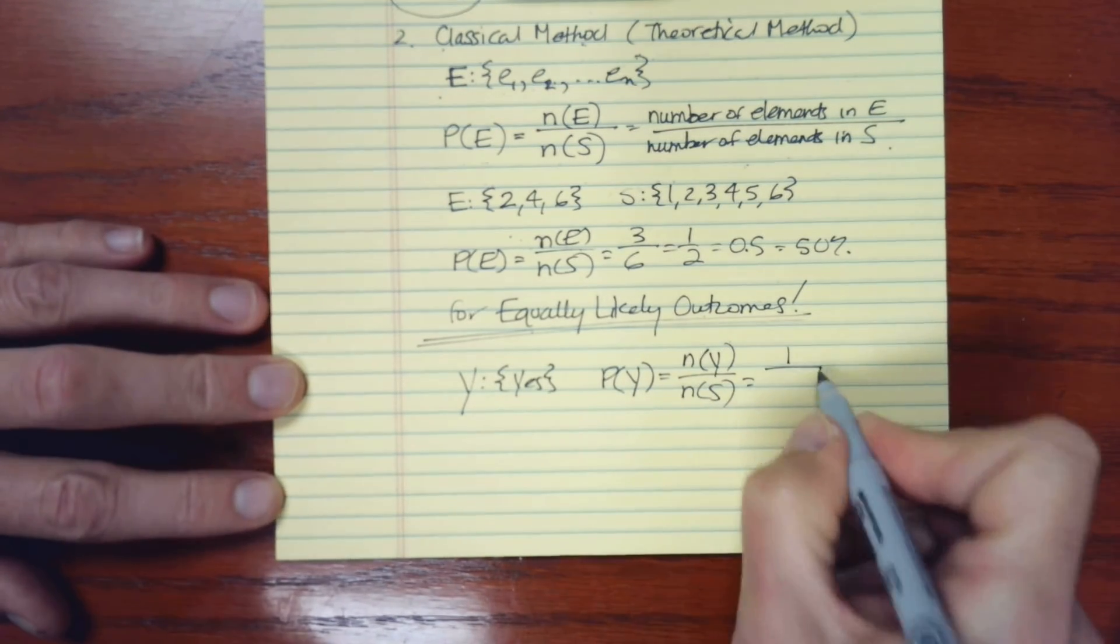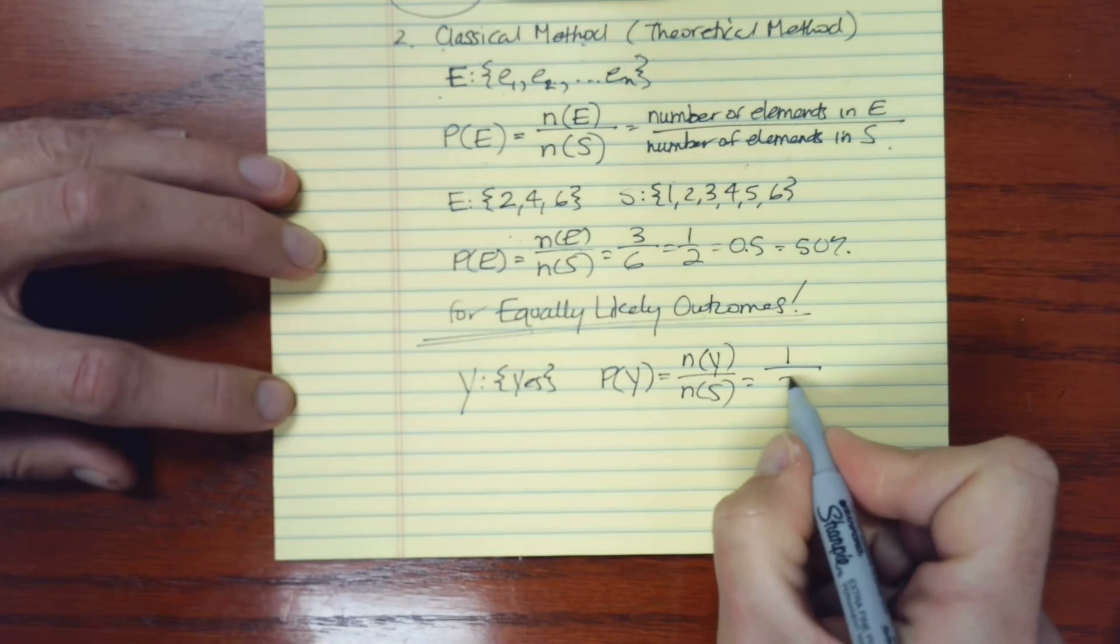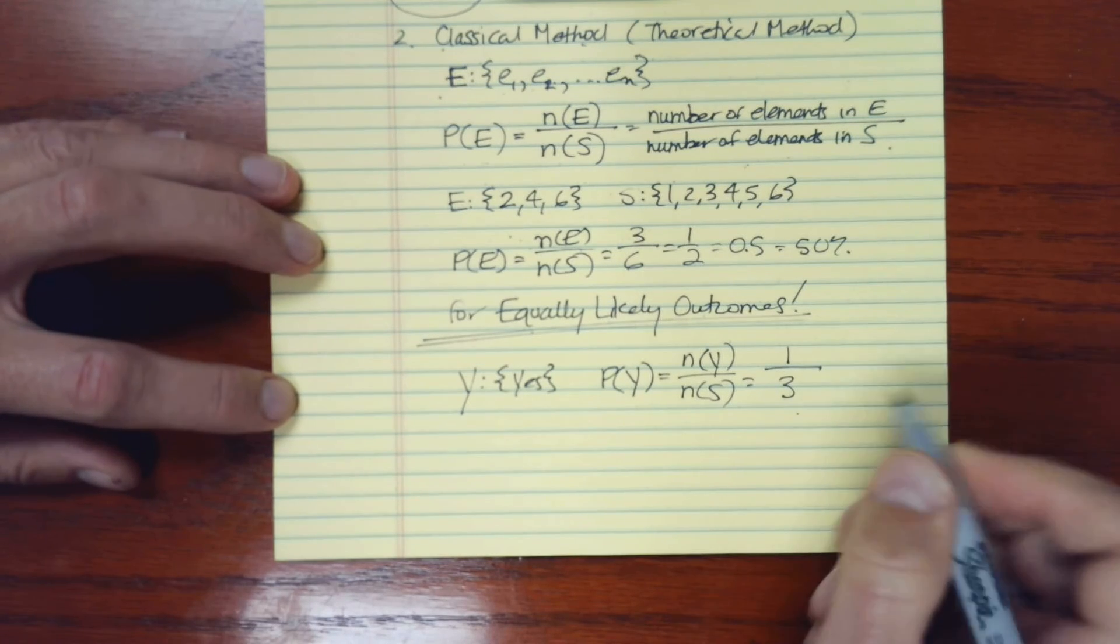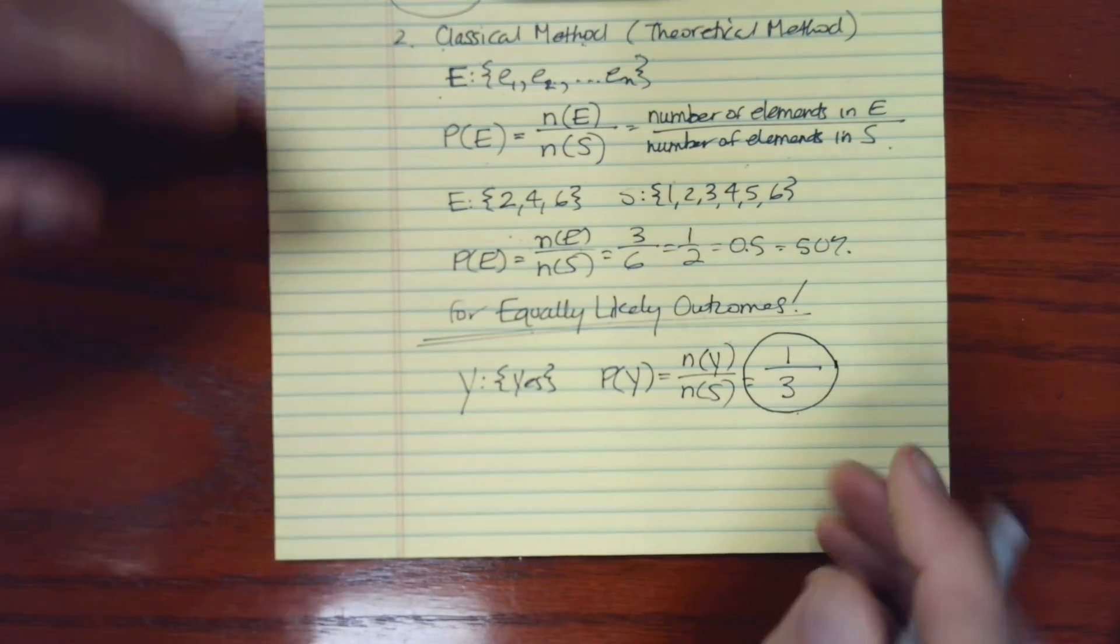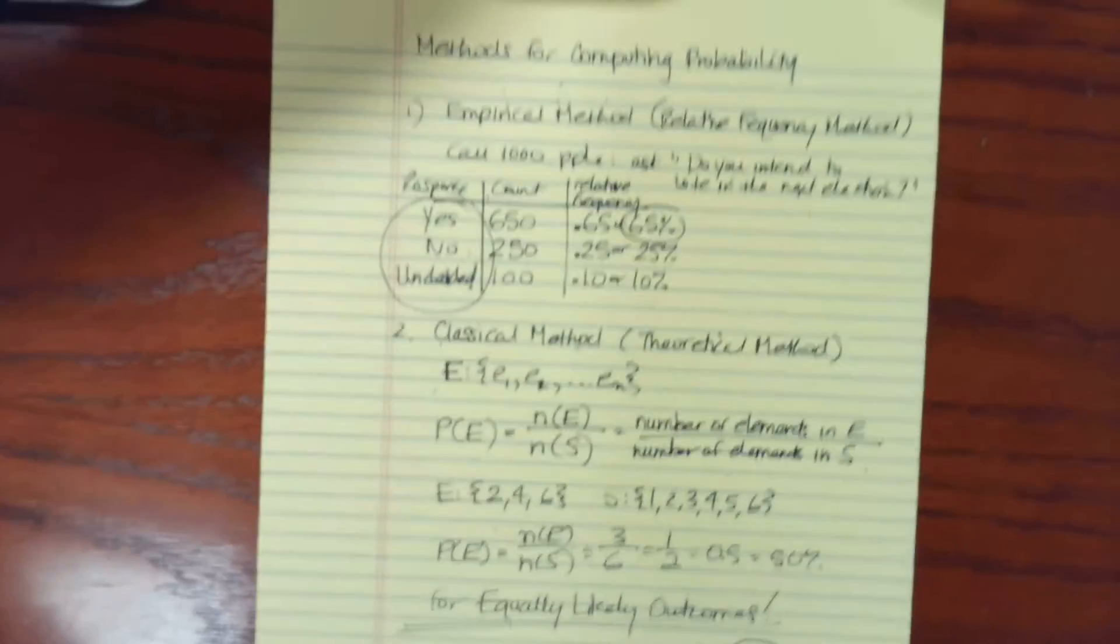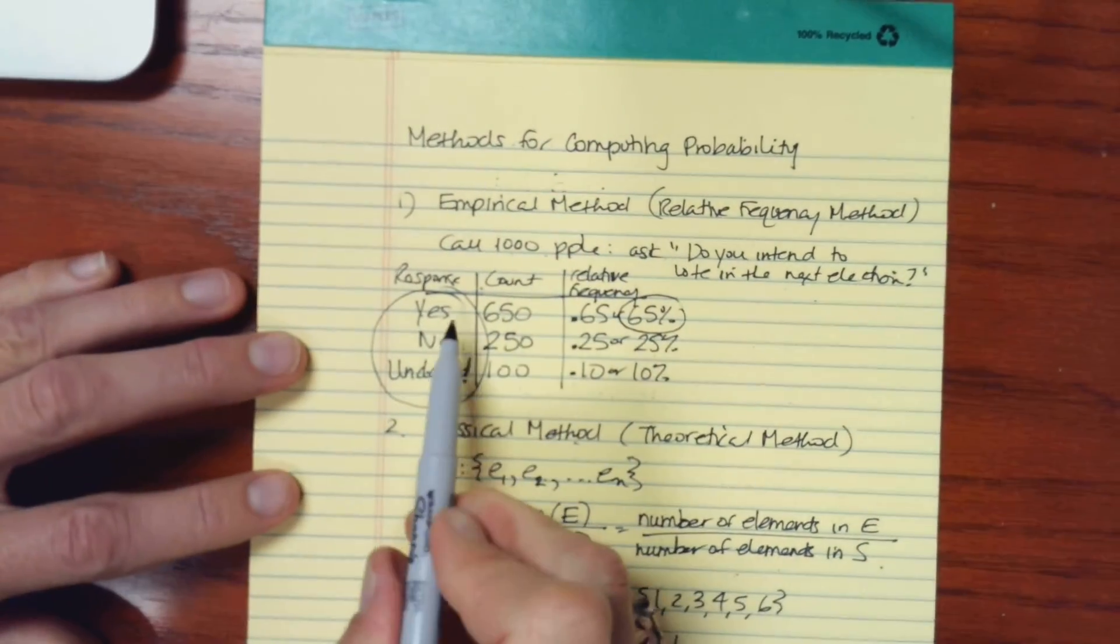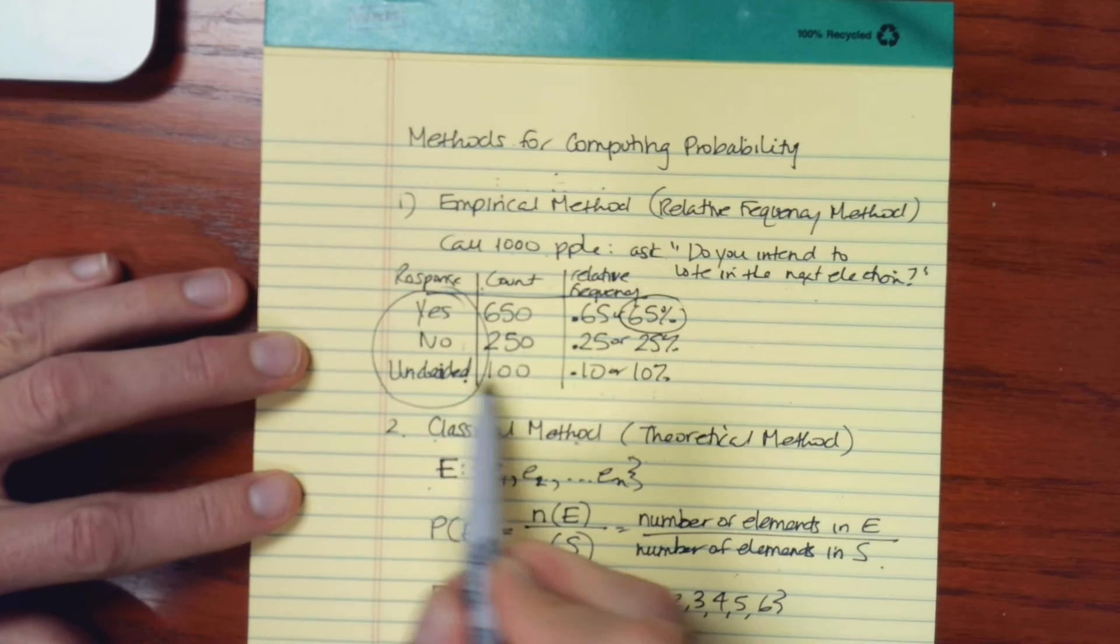There were three possible responses: yes, no, undecided. I may be tempted to say that the probability is a third. However, I know that these are actually not equally likely outcomes, and so that would be a mistake to try to use the classical method here.